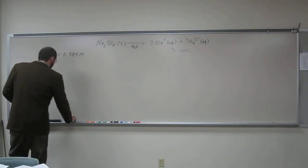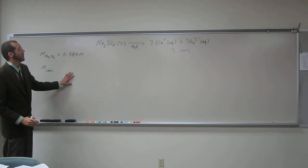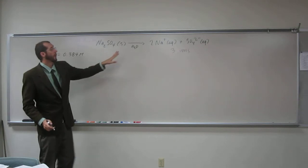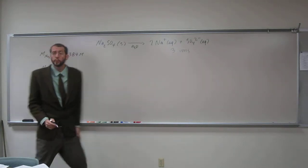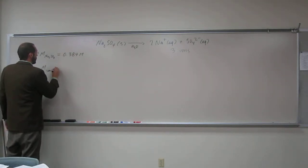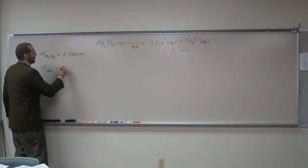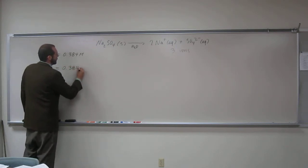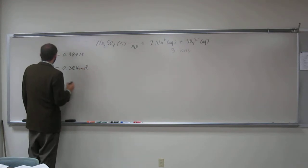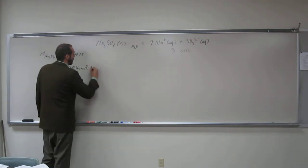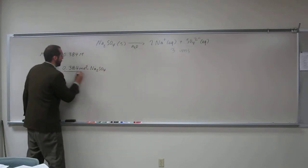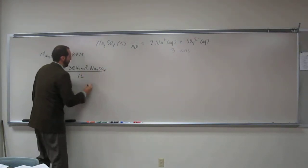So in order to do this, what you're going to use is that conversion factor. One mole of sodium sulfate equals three moles of ions. So let's just do that. If you remember, molarity is just moles per liter, and we started with moles of sodium sulfate per one liter.